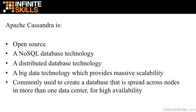Apache Cassandra is commonly used to create a database that is spread across nodes in more than one data center for high availability. Not only can your database live across multiple servers, but those servers can be spread across more than one data center. This is a reason people often choose Cassandra — if one data center goes down, another can continue to serve requests so that their application is always available.